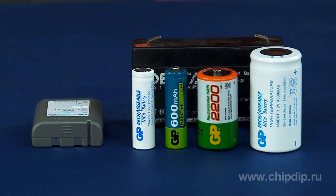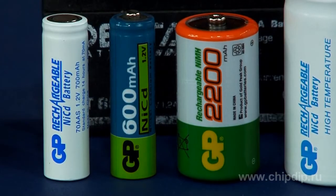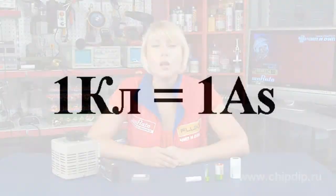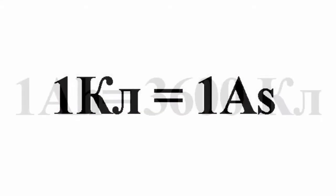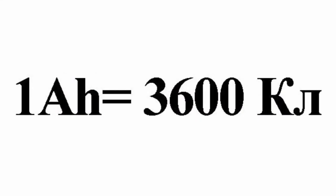Milliampere hour is a derived unit widely used to specify the capacity of small batteries. The ampere hour value may be reduced to coulombs, the SI unit of charge. Since one coulomb is equal to one ampere second, one ampere hour is equal to three thousand six hundred coulombs.